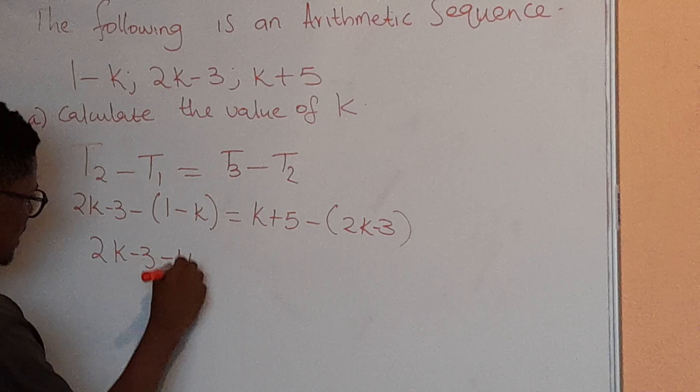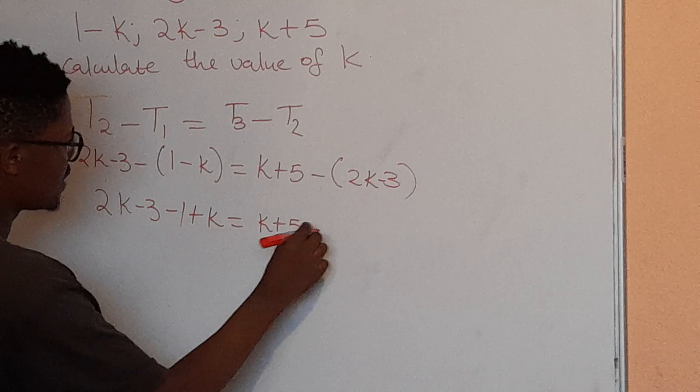equals to k plus 5, minus times 2k is minus 2k, minus times minus 3 is positive 3.